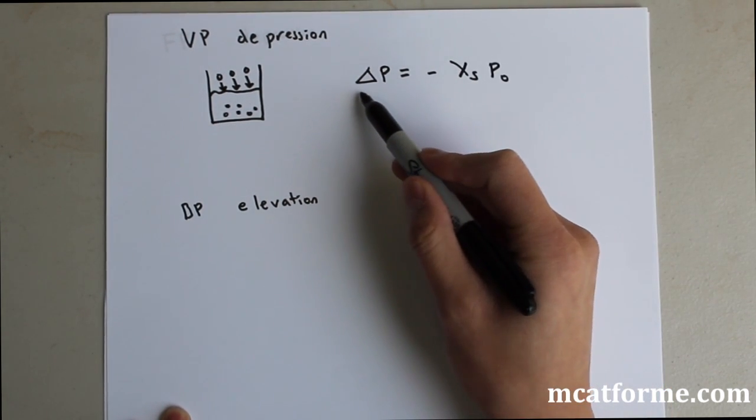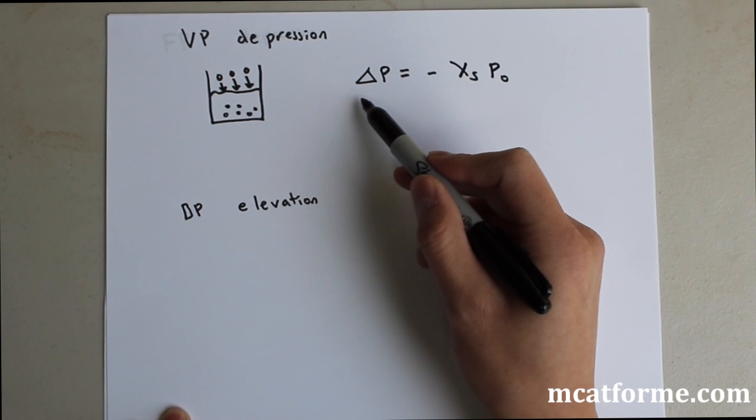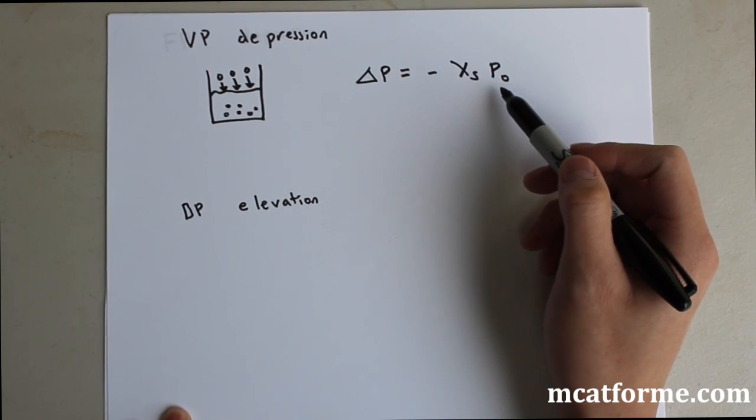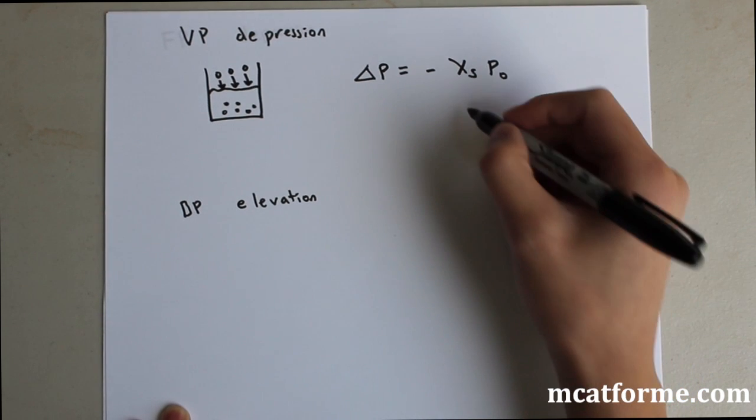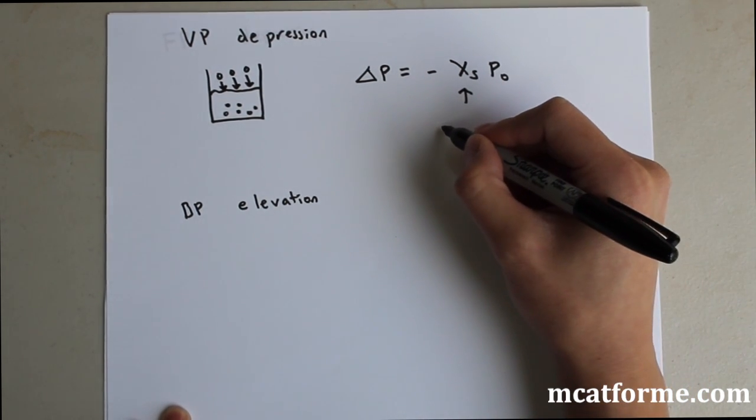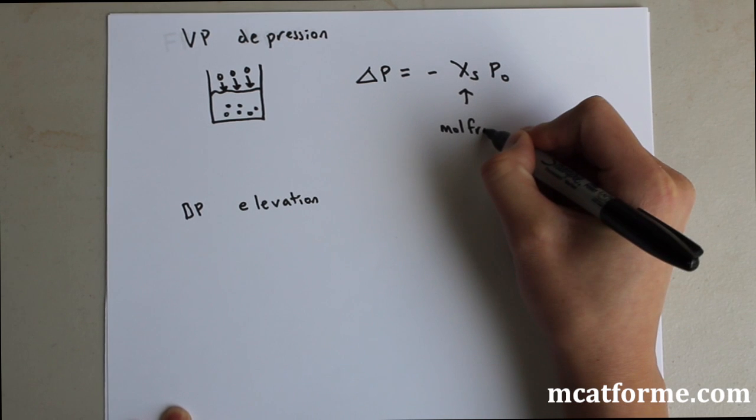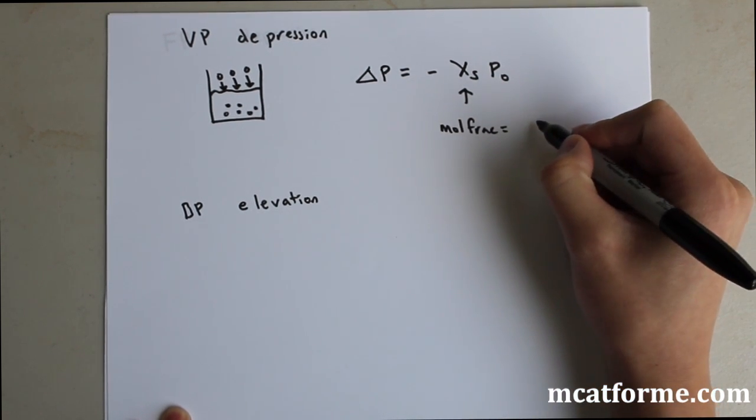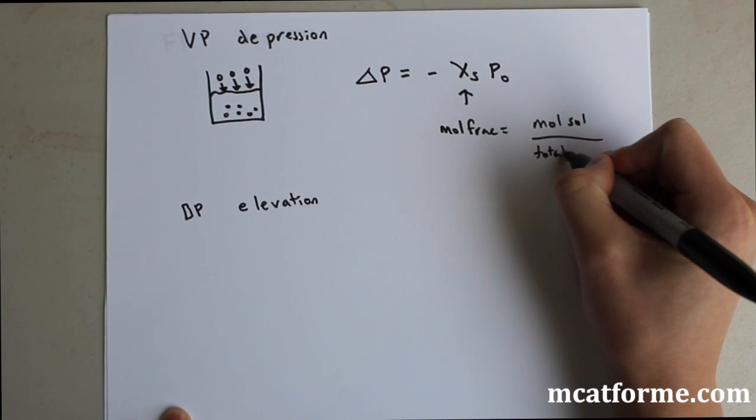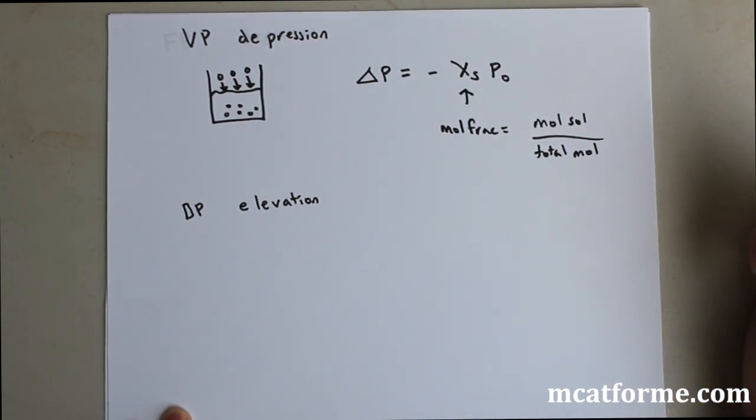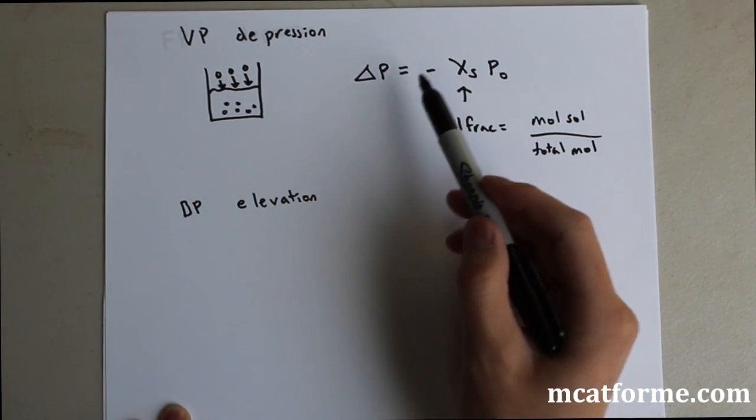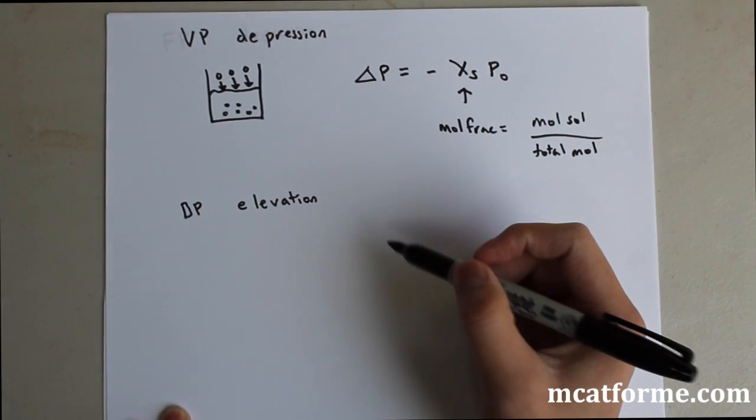Delta P, the change in vapor pressure, and P0 is the initial vapor pressure. This Xs is the mole fraction of the solute. Mole fraction was defined as moles of that solute that we added over total number of moles. We just need to memorize that equation. It's always vapor pressure depression due to that negative sign.